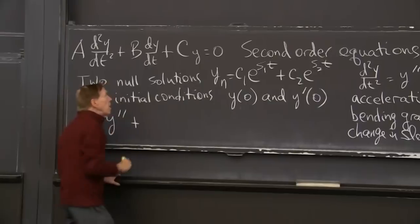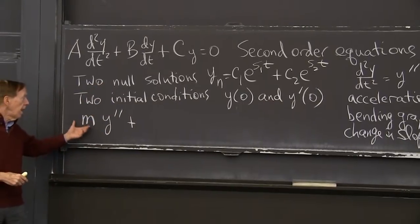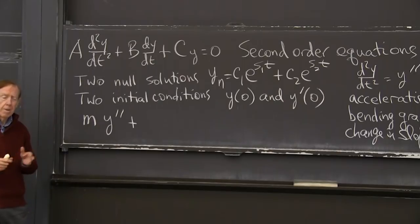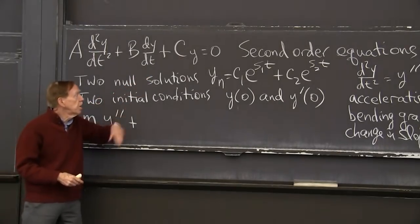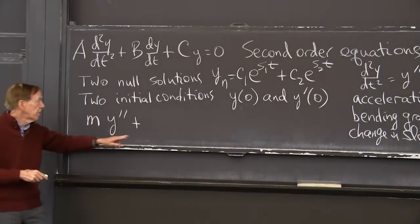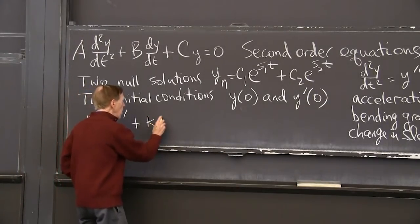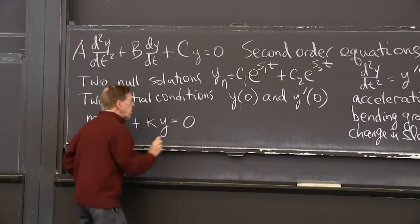plus the force. So this is Newton's law: ma = f, f equals ma. k, the force is proportional with a minus sign, so it's going to come on this side as a plus, proportional to y. There's the equation.